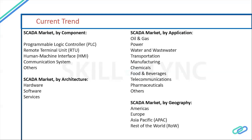The SCADA market by architecture requires hardware, software, and services — all three mixed together to connect our schedules. Currently SCADA applications are used across different industries: oil and gas, power, water and wastewater, transportation, manufacturing, chemical, food and beverage, telecommunications, pharmaceutical, and others. Globally, approximately all industries across the globe are now using SCADA.